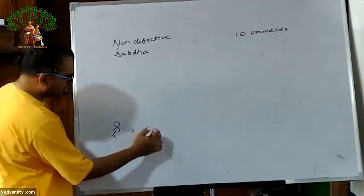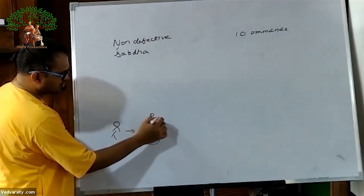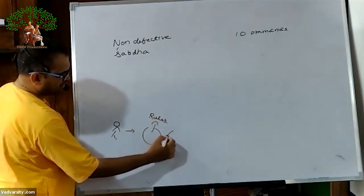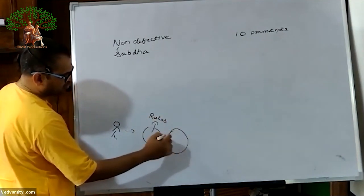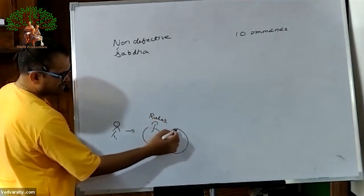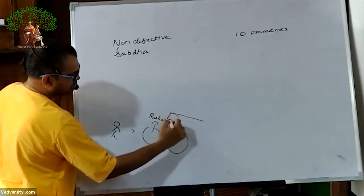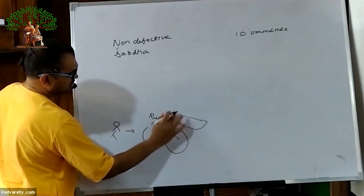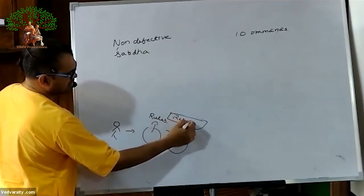Then after that, he developed some rules. And after that, after developing those rules, he applied those rules once again on the nature. And after that, he will get some result, some information.